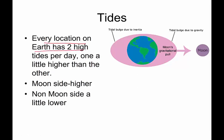Every location on earth has two high tides per day. And one is always a little bit higher than the other.